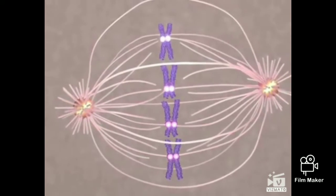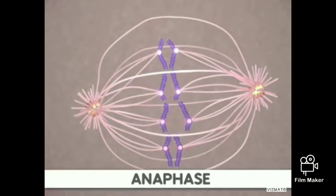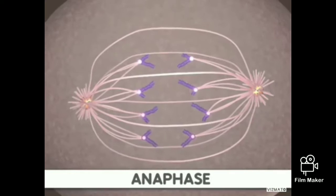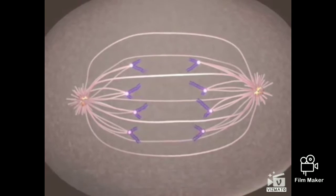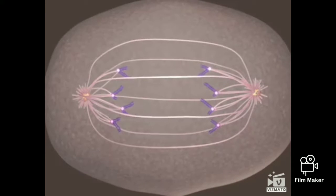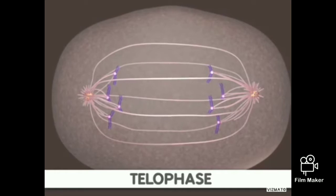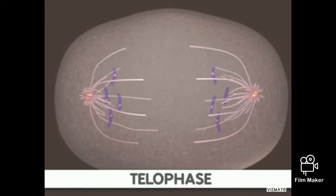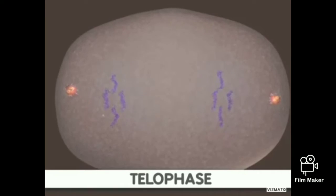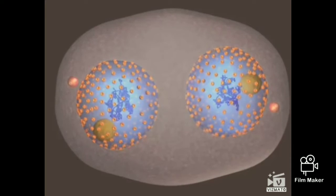Separation occurs during anaphase through a shortening of the microtubules attached to the kinetochore. Additionally, the poles of the cell move farther apart, causing increased separation of sister chromatids. At the end of anaphase, the sister chromatids appear at the two ends of the cell. Telophase is the final stage of mitosis. Here, the components of the new cells begin to appear, the spindle fibers are broken up, a new nuclear membrane surrounds the chromosomes at each end of the cell, and the chromosomes uncoil and return to an uncondensed state. Mitosis is now complete.